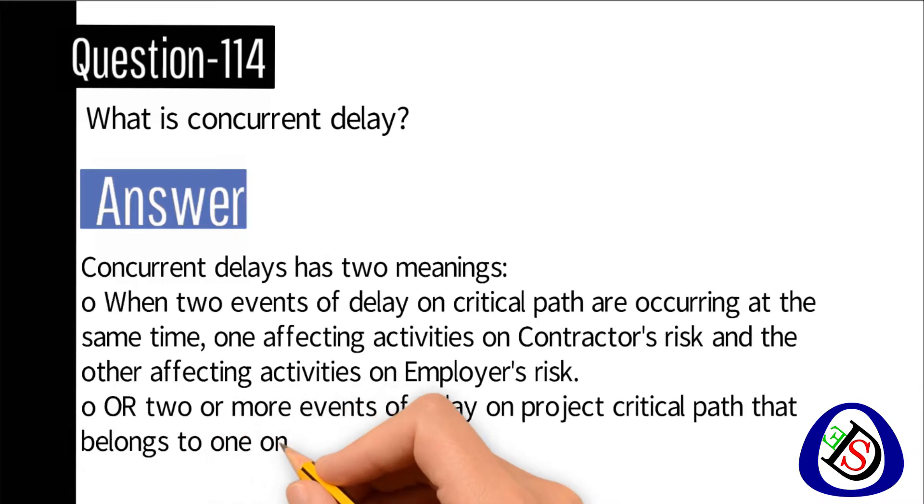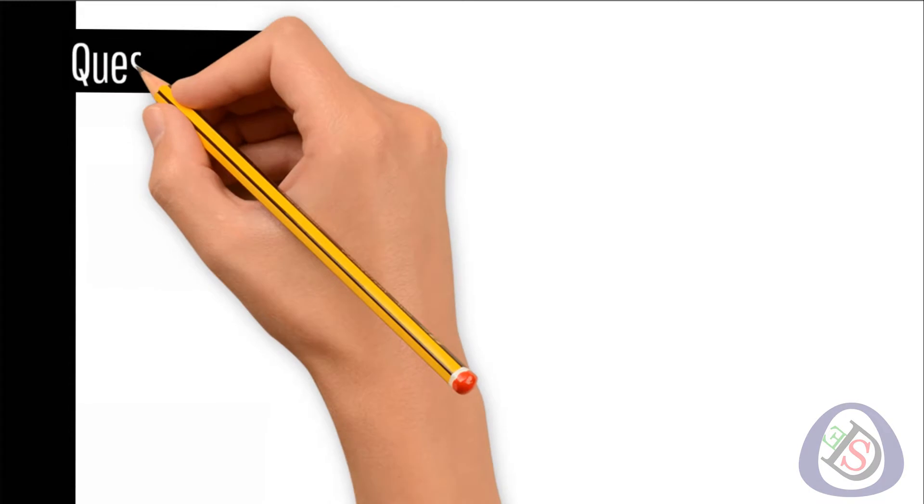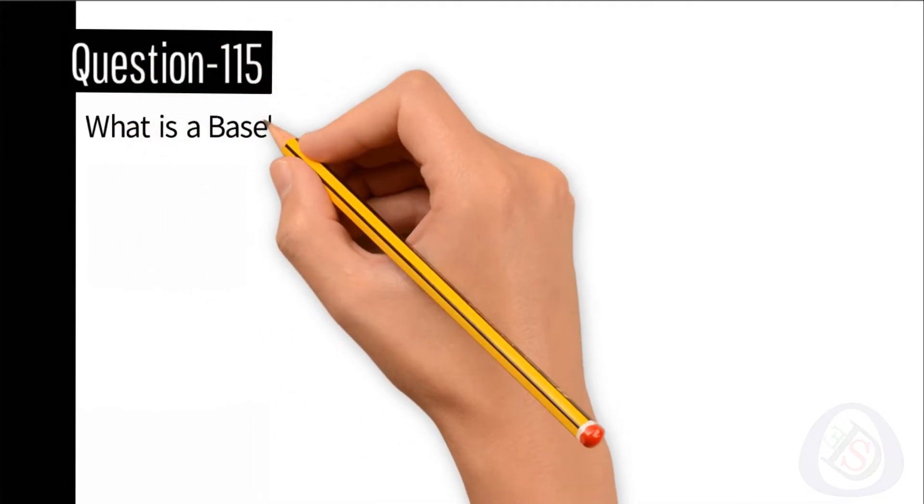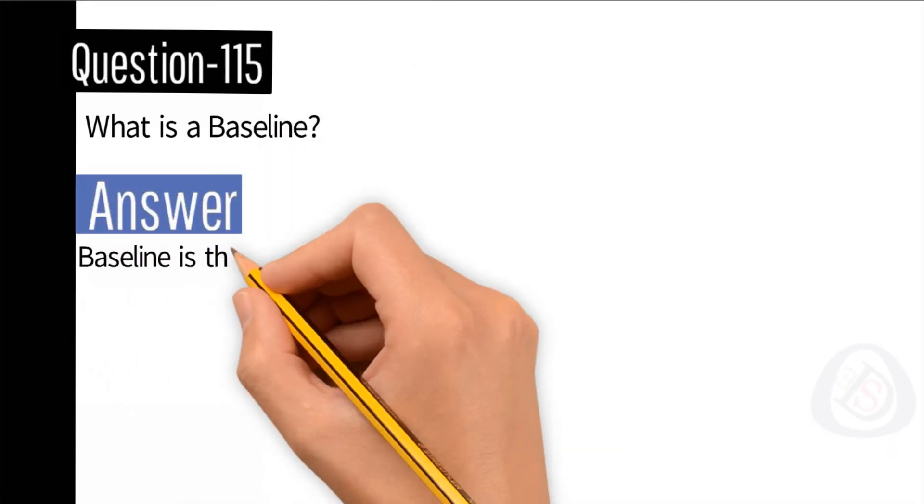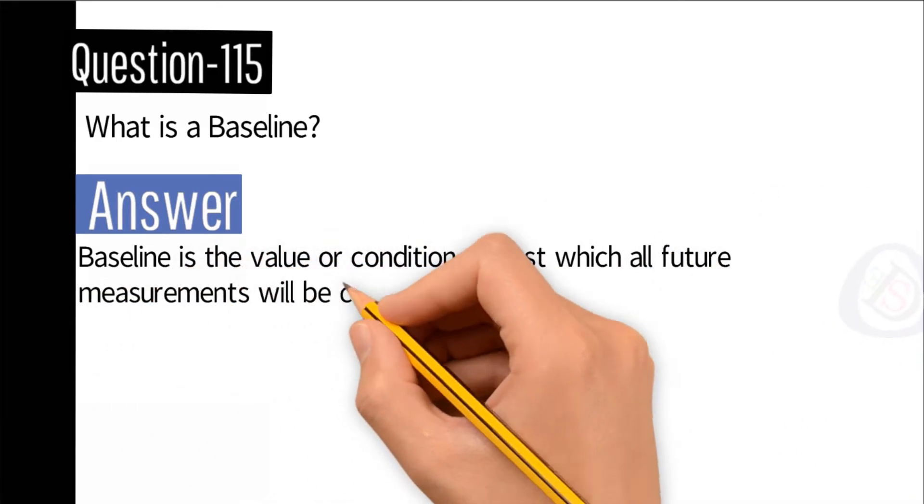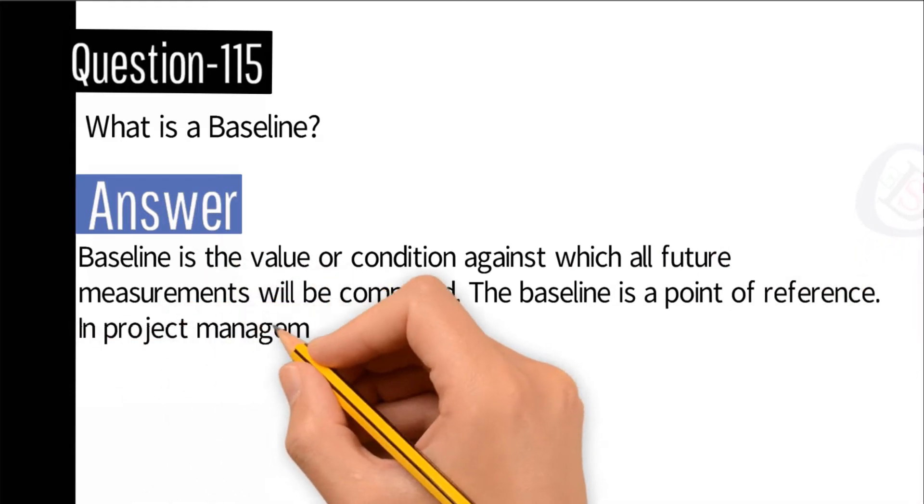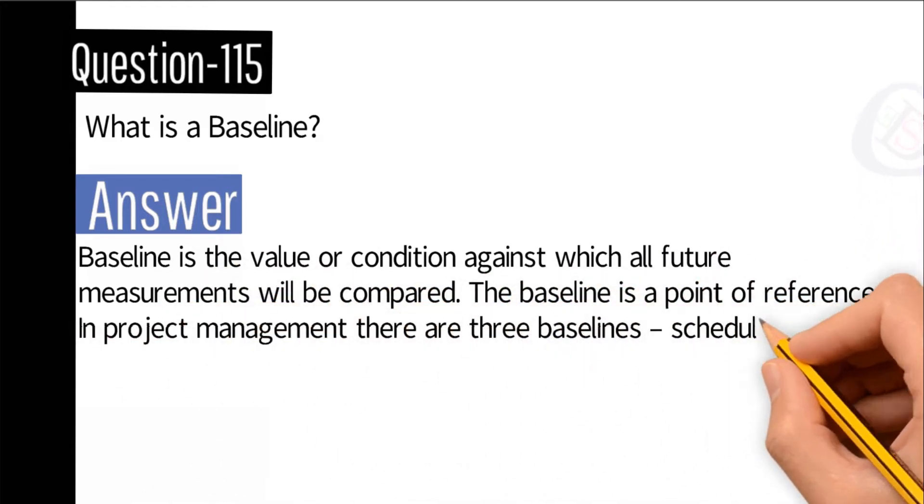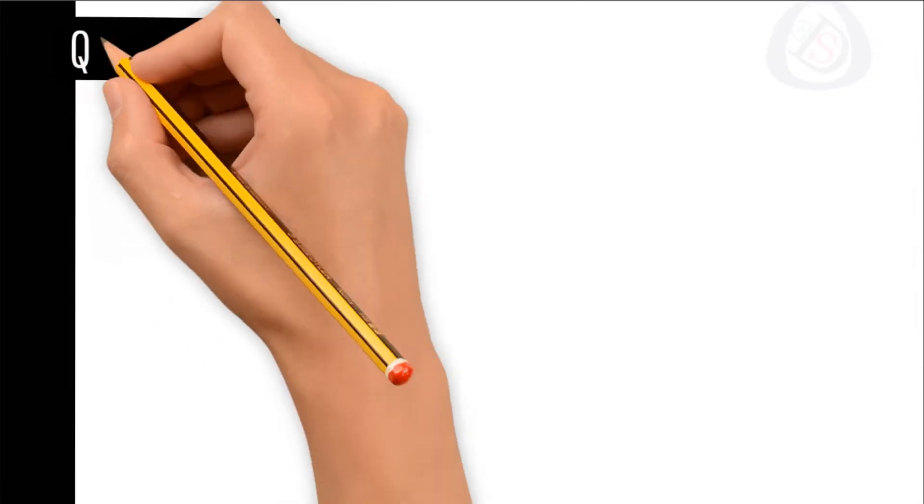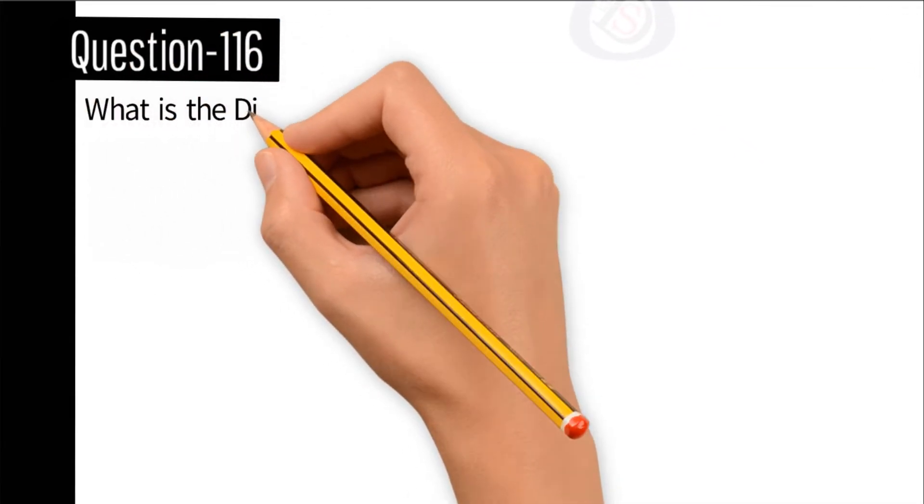Question number 115: What is a baseline? Answer: Baseline is the value or condition against which all future measurements will be compared. The baseline is a point of reference. In project management, there are three baselines: schedule baseline, cost baseline, and scope baseline.